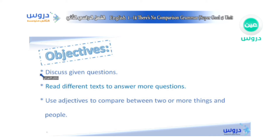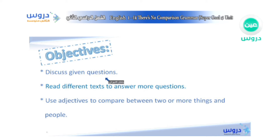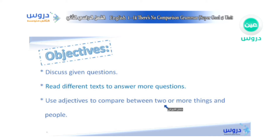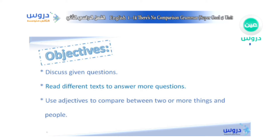We have some objectives: first, discuss given questions; number two, read different texts to answer more questions; number three, use adjectives to compare between two or more things and people.